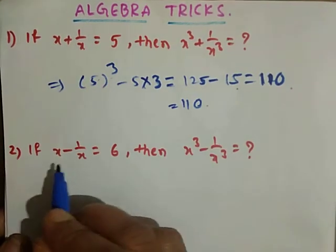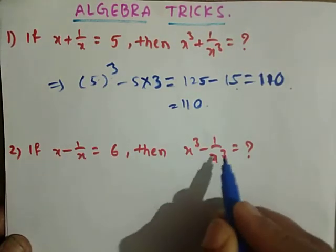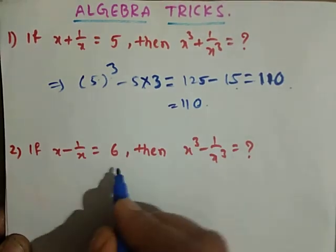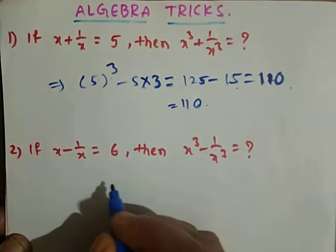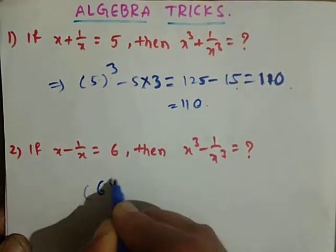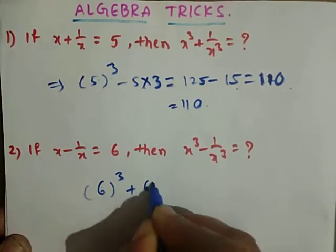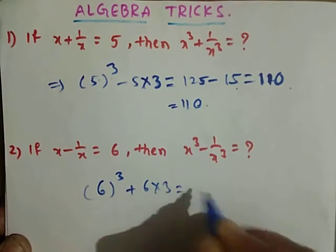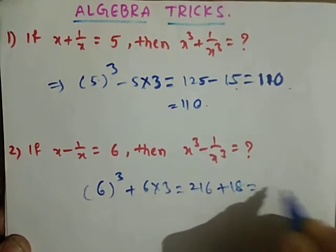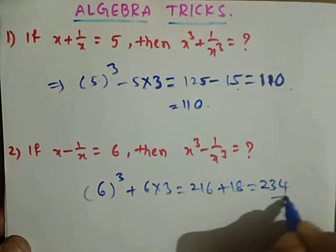Next, if x minus 1 by x equals 6, then x cube minus 1 by x cube equals how much? x minus 1 by x equals 6 means 6 cube plus 6 into 3. That is equal to 216 plus 18, which is 234.